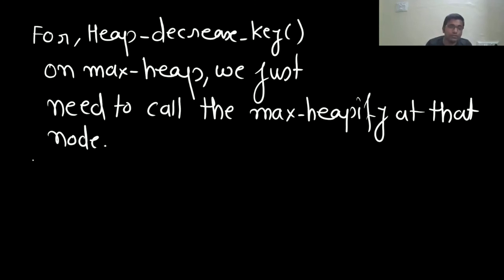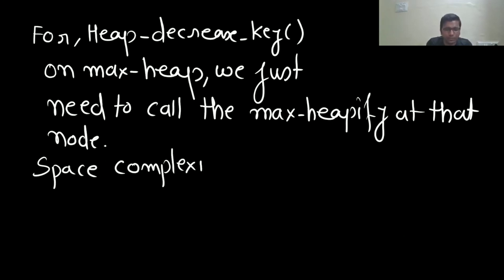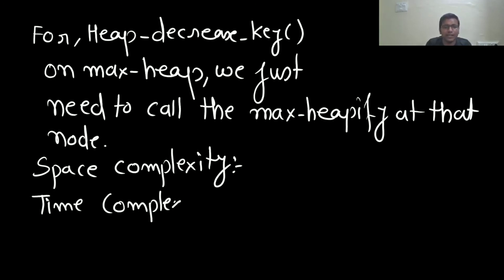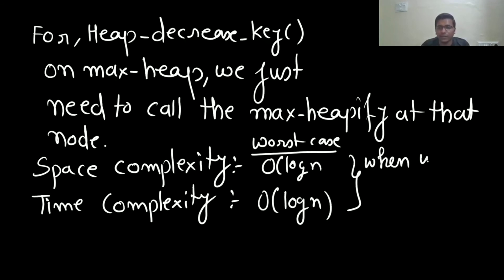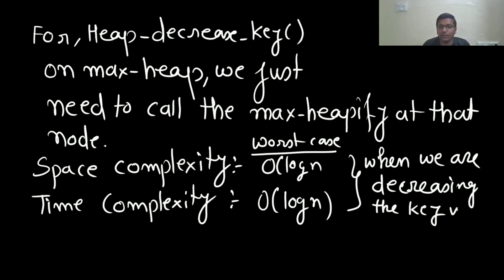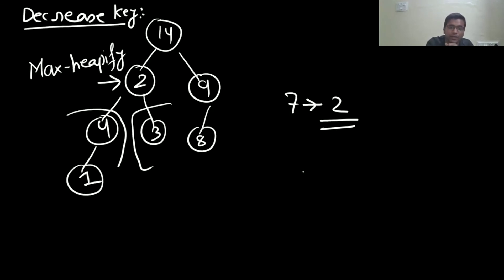So what is the space complexity and time complexity for decrease-key? The space complexity is at maximum O(log n) due to the recursion stack of max-heapify. For the worst case: when you are calling max-heapify at the root — for example, if I decrease the root's key value to 0 or something smaller — then max-heapify has to traverse from root to leaf, giving worst case O(log n).